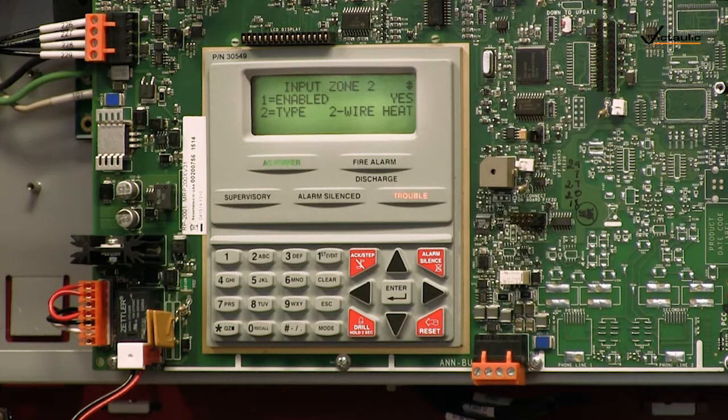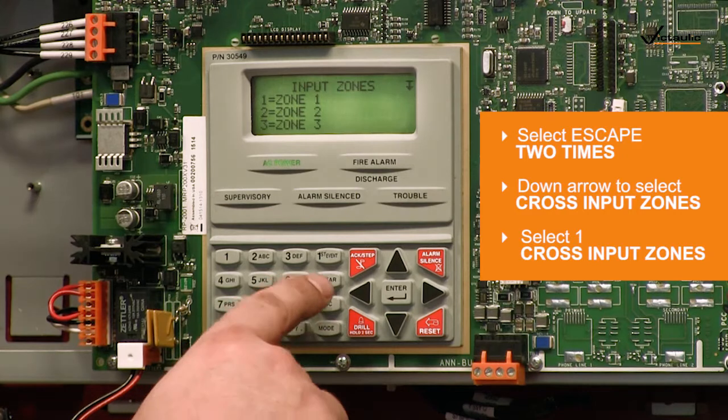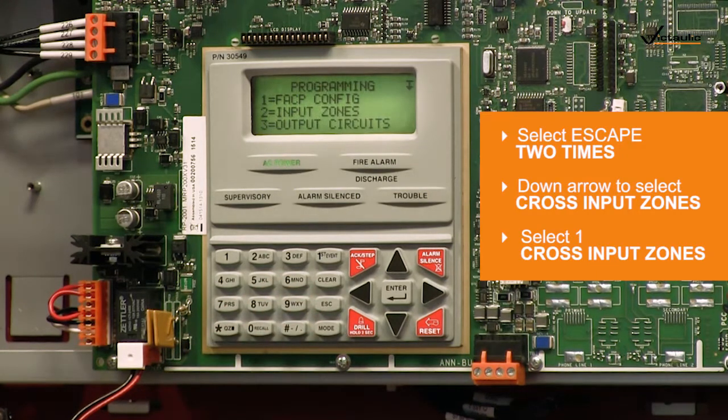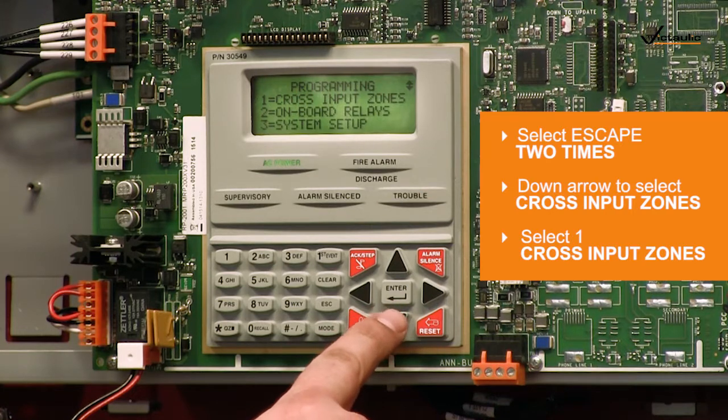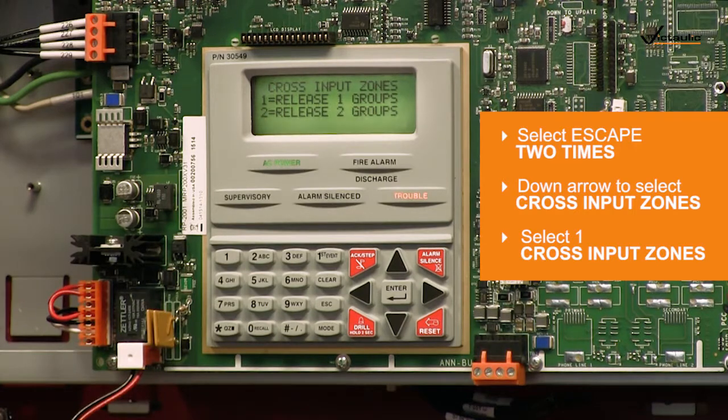Select Escape two times to go back to the programming screen. When returned to the main programming screen, press the down key once and select 1 for cross input zones.